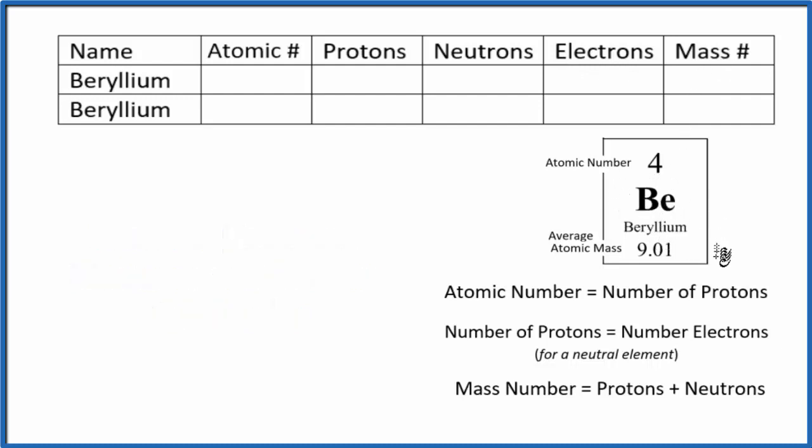As we look at the periodic table, here's beryllium, and we know that for beryllium we have two isotopes. We'll talk more about that later. So with beryllium, I can see the atomic number, that's going to be four.